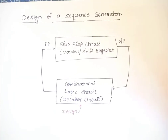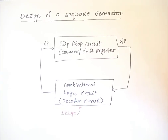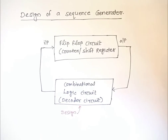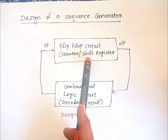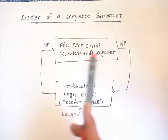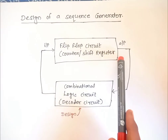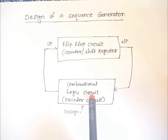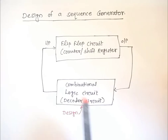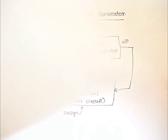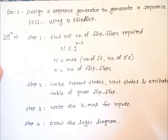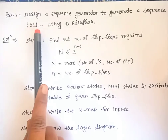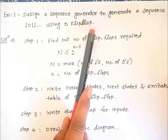Hello, dear students. Let us study the design of a sequence generator. A sequence generator can be designed by using flip-flops, counters, or shift registers. For the design of the sequence generator, what needs to be done is we are going to design a combinational logic circuit, also called the next state decoder circuit. Let us take one example: design a sequence generator to generate the sequence 1011 using D flip-flops.